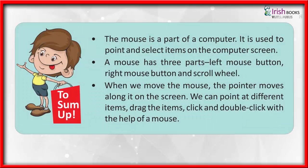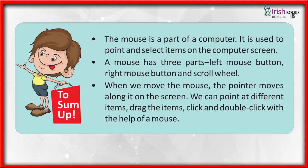Summary: The mouse is a part of a computer. It is used to point and select items on the computer screen. A mouse has three parts: left mouse button, right mouse button, and scroll wheel. When we move the mouse, the pointer moves along it on the screen. We can point at different items, drag items, click, and double click with the help of a mouse.